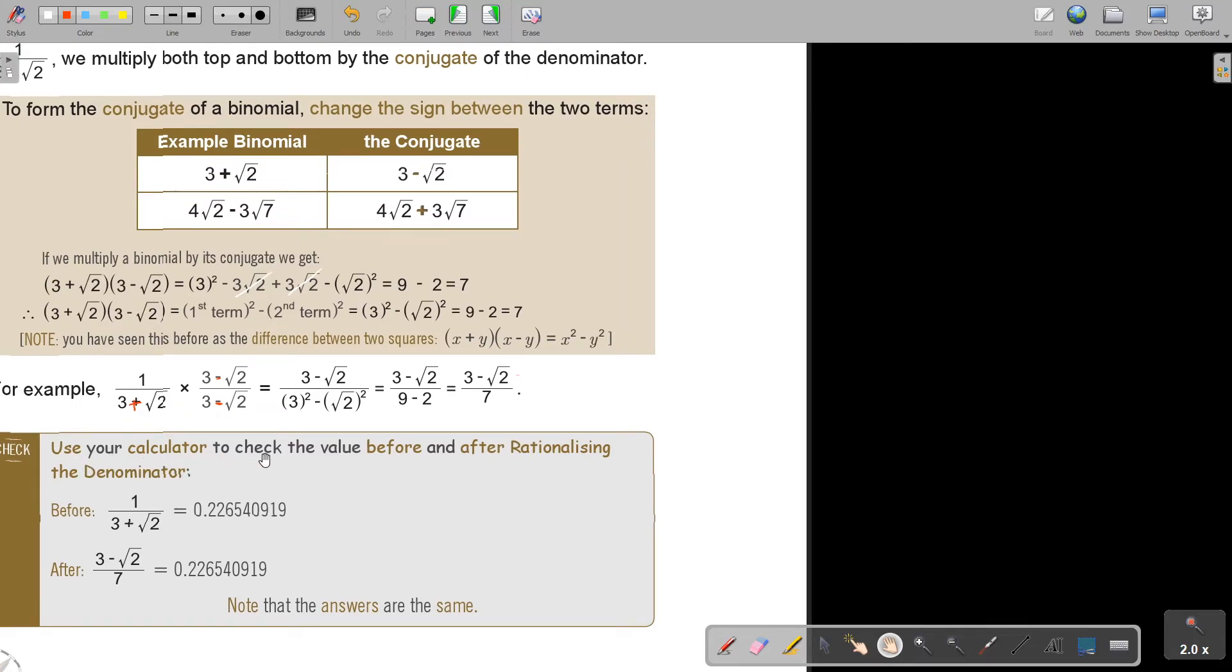Use your calculator to check the value before and after rationalizing the denominator. This is very important because you cannot do things that change the original value. So if you do something at the end your final answer of the new thing must be the same as the answer of the original thing. If you were pressing that on the calculator that was your decimal, and after we rationalized it you press this, this is exactly the same. So we did not change the answer.